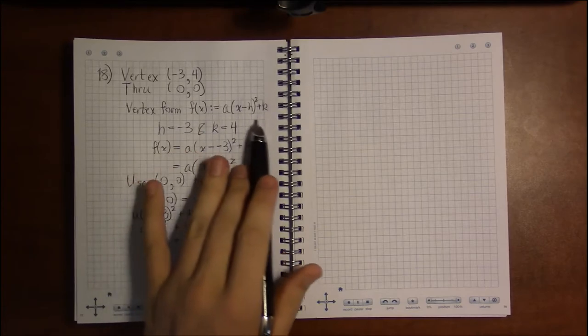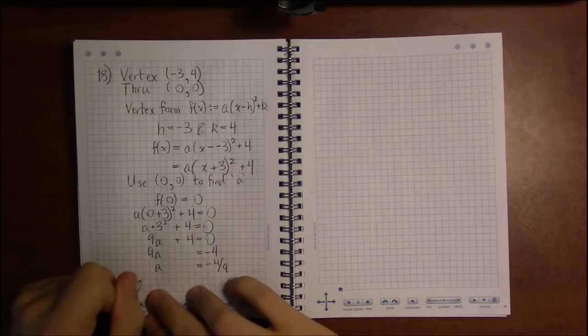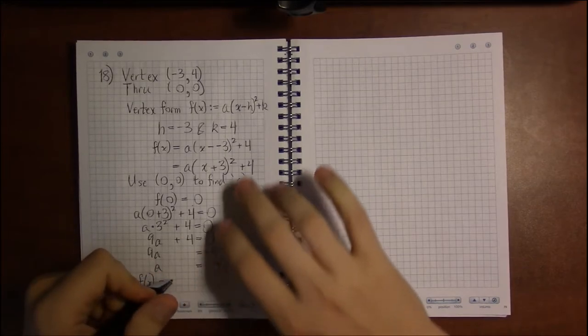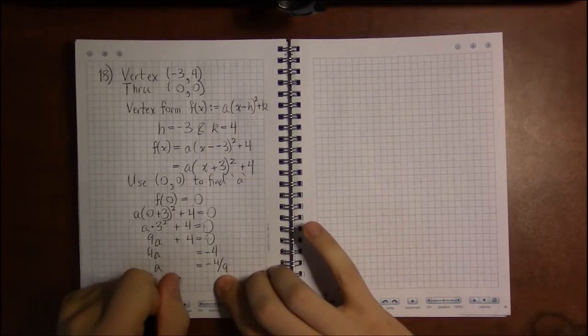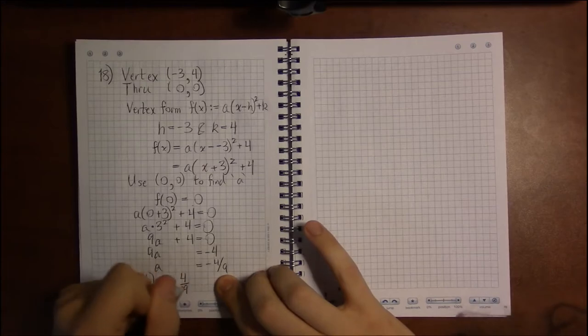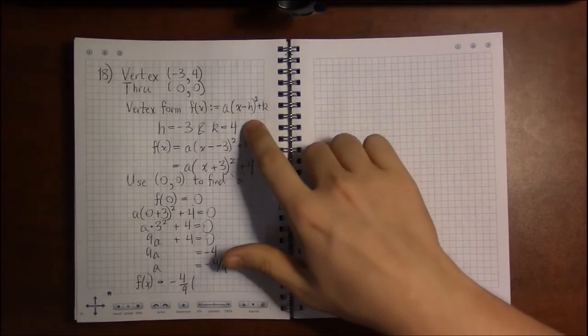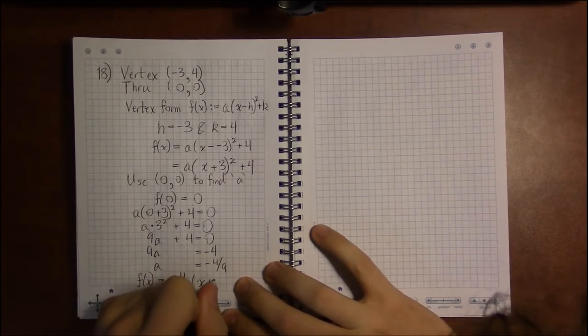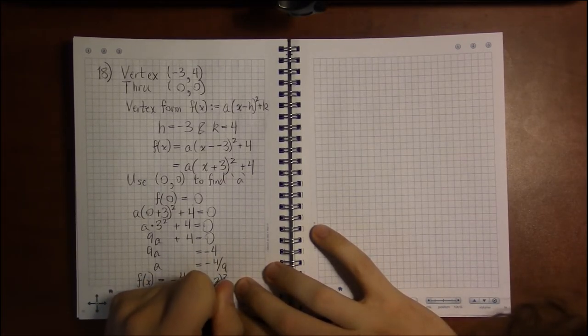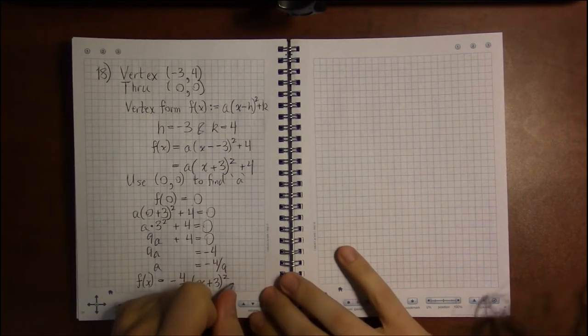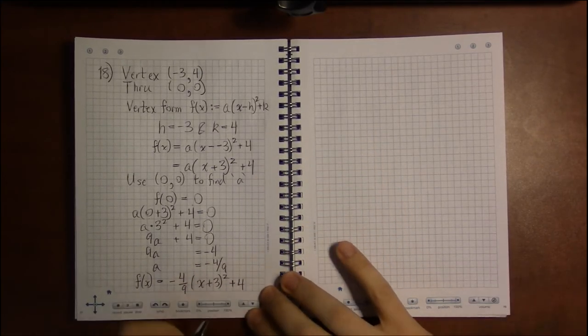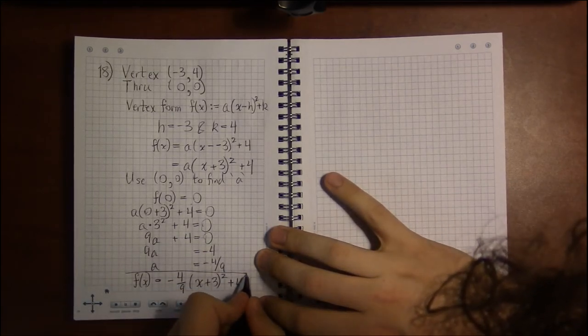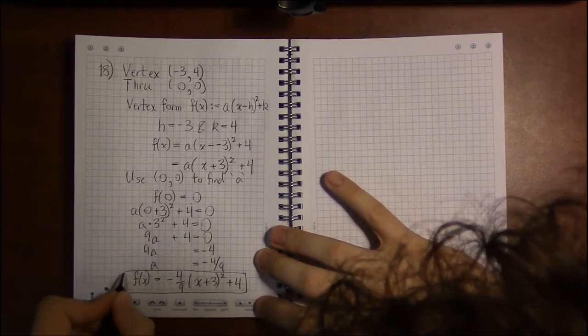We can fill in all the missing pieces for the vertex form. So our quadratic is a, which we now know to be -4/9, times (x - a -3), but we simplified that earlier to (x + 3), square that sum, and then add 4. And that is our answer.